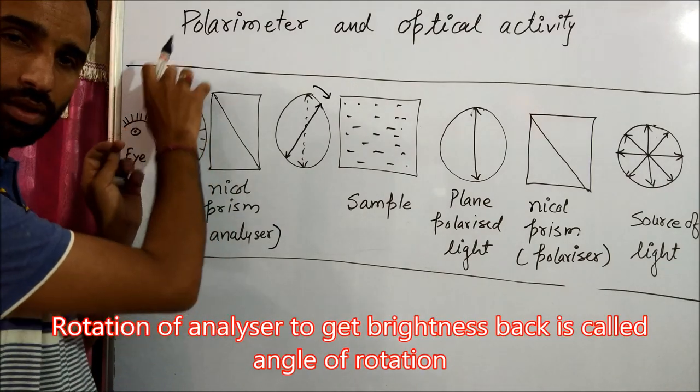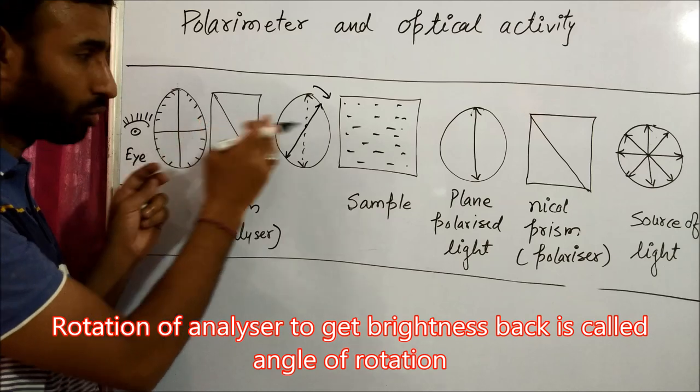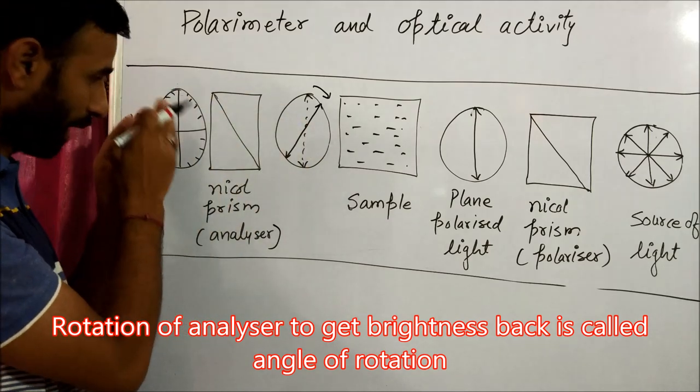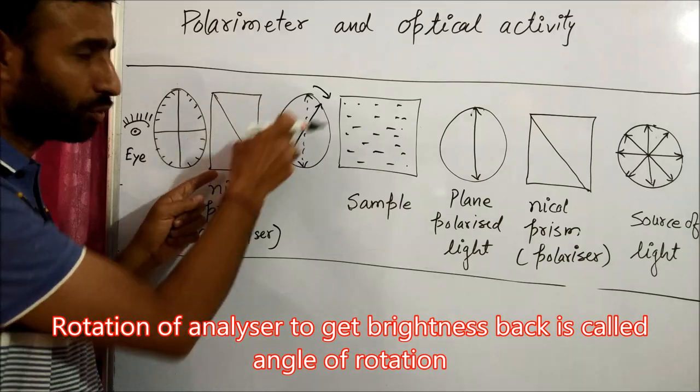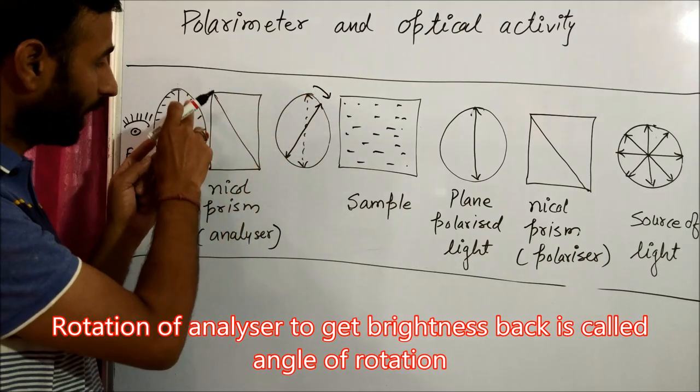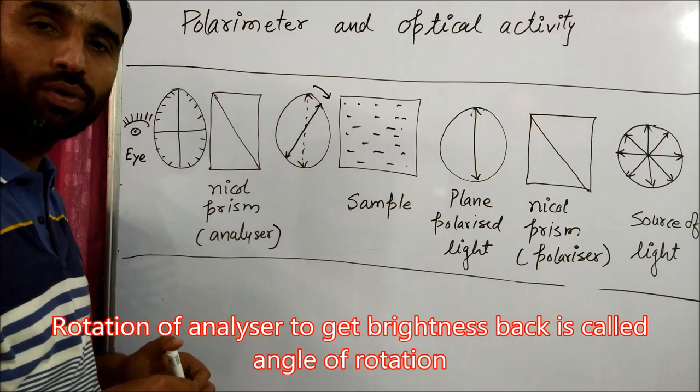Otherwise, this is dark. Now, to get that brightness, we have to rotate it to make it parallel to this plane and we get the angle of rotation.